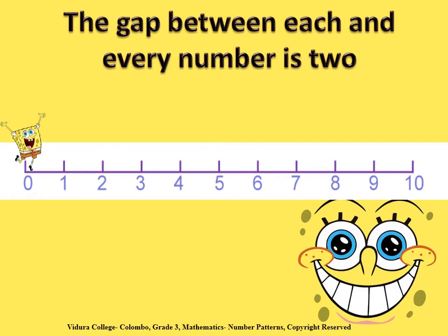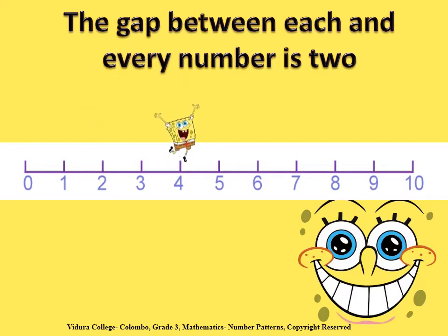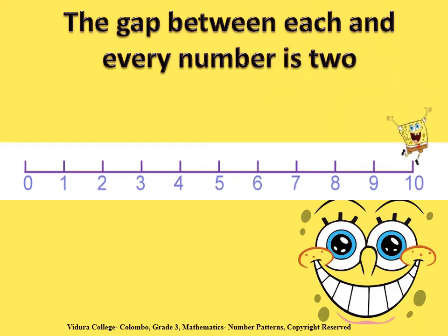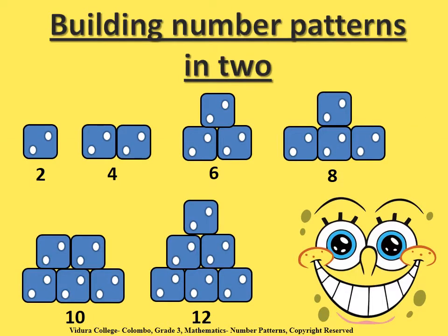Okay children, shall we find the gap between each and every number? You will see a number line starting from zero to ten, and that little SpongeBob will jump from number to number. Look carefully at the number he lands. Children, did you see the way he jumped? The gap between the numbers he landed is two.